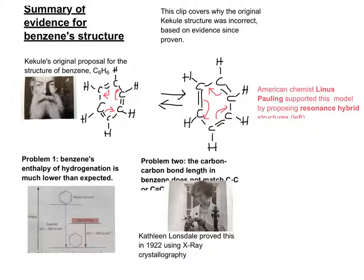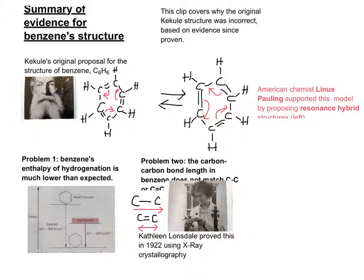Kathleen Lonsdale, the first female president of the Royal Society of Chemistry, was able to prove in 1922 using X-ray crystallography that the carbon-carbon bond length across the benzene ring is actually equal throughout. A carbon-carbon single bond is significantly longer than a carbon-carbon double bond as found in an alkene. Since benzene forms a symmetrically perfect hexagon, the bond length must be somewhere in between — and it doesn't match either a single or double bond. The X-ray crystallography evidence is quite stunning and conclusive.